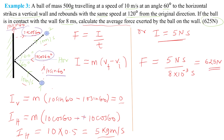625 newtons. Now let's check the direction of this force. The impulse of 5 newton seconds is only in the horizontal plane, so the force is also in the horizontal plane. There is no force in the vertical plane because the impulse in the vertical plane is zero. There is a force of 625 newtons in the horizontal plane because there is a change in momentum in the horizontal plane.